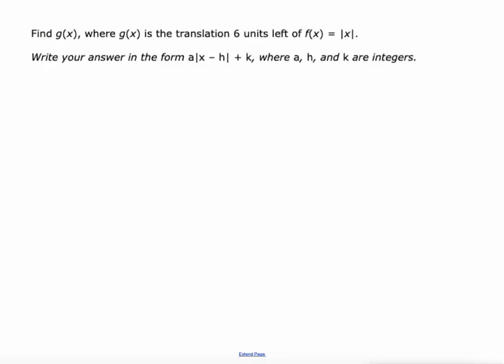Here's a verbal description, it says do a translation six units left. No a value, no k value to worry about. We're just going to worry about h. h controls the translations left and right, the horizontal translations. It's going to be g(x), IXL puts the g(x) in there for you by the way, equals the absolute value of x minus negative 6.